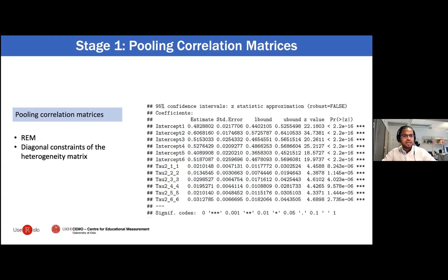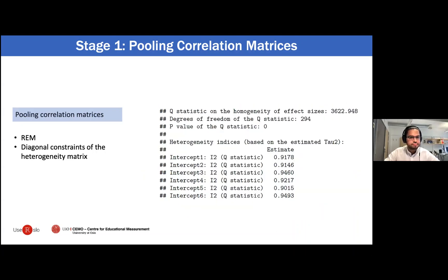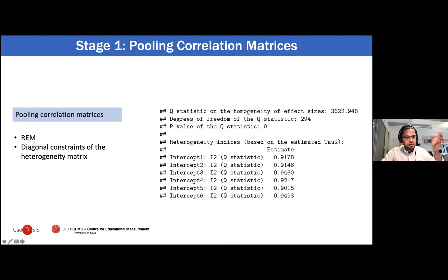As output of stage one you will get estimates of the pooled correlations and the heterogeneities, along with confidence intervals and standard errors. You can also obtain a measure of I-squared for heterogeneity between studies in the correlation coefficients. A common assumption is that an I-squared of 25, 50, and 75 would be considered low, medium, and high respectively.